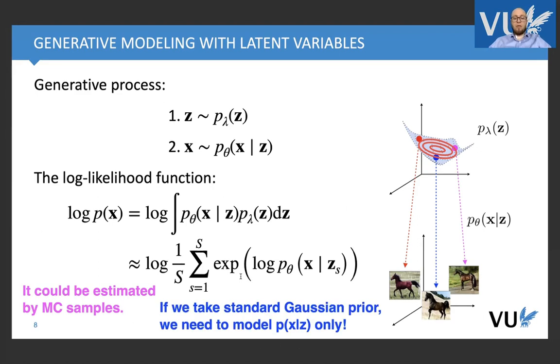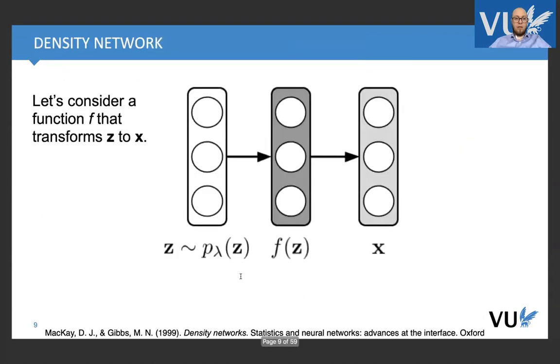And if we take standard Gaussian prior, of course, then we need only to model p of x given z, right? However, this is still likelihood based approach, still prescribed approach, but we will see why we start with that later on.